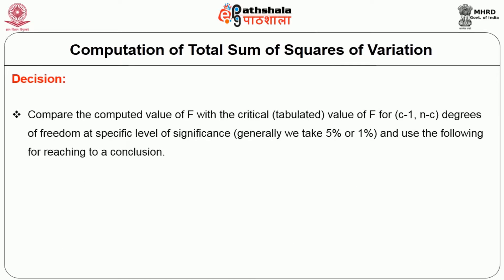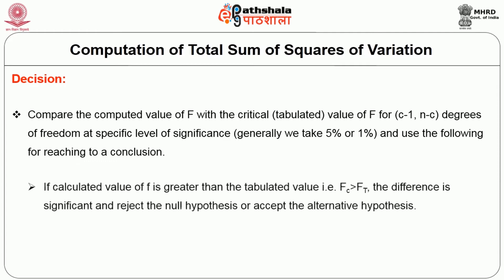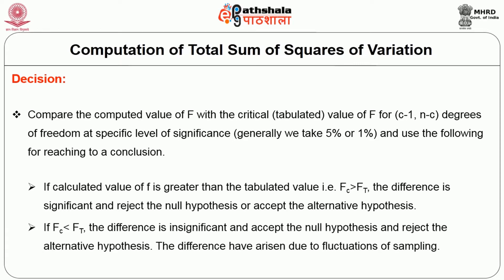For the decision: compare the computed value of F with the critical value of F for (C − 1) and (N − C) degrees of freedom at a specific level of significance, generally 5% or 1%. If the calculated value of F is greater than the tabulated value, the difference is significant — reject the null hypothesis and accept the alternate hypothesis. If the calculated value of F is less than the tabulated value, the difference is insignificant — accept the null hypothesis and reject the alternate hypothesis.